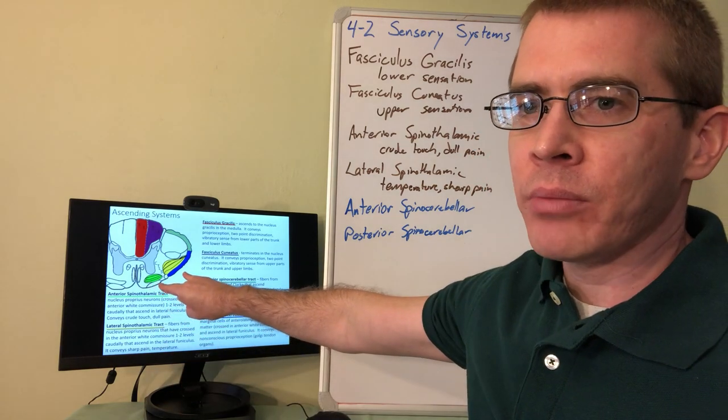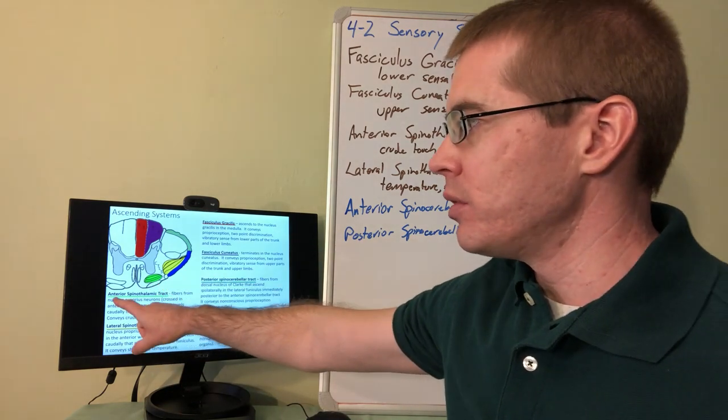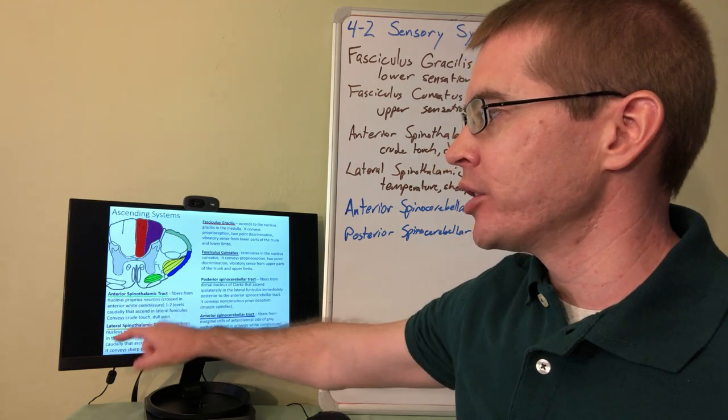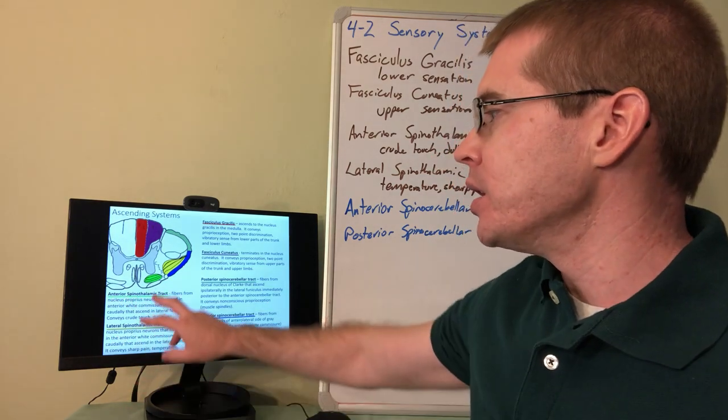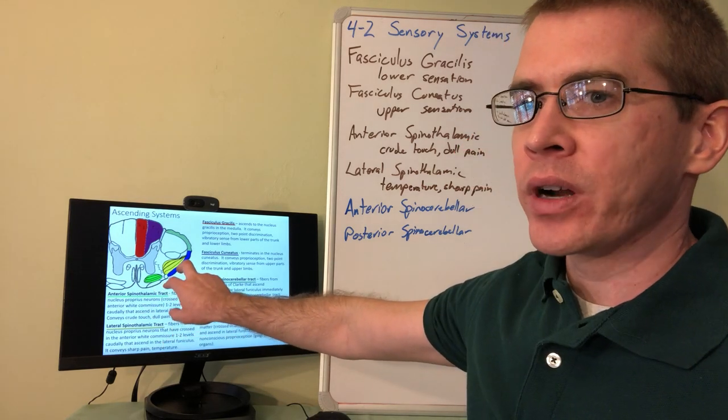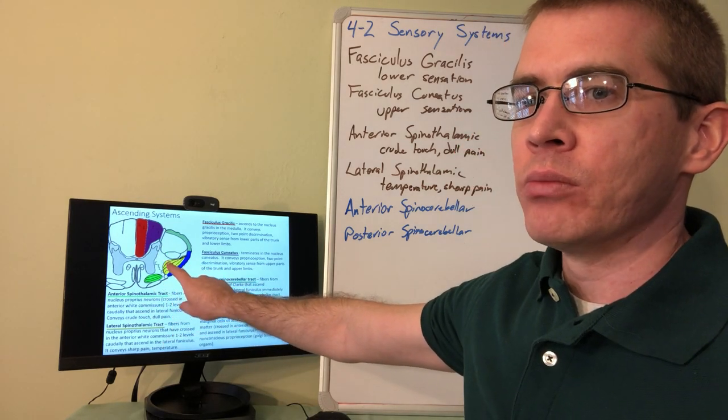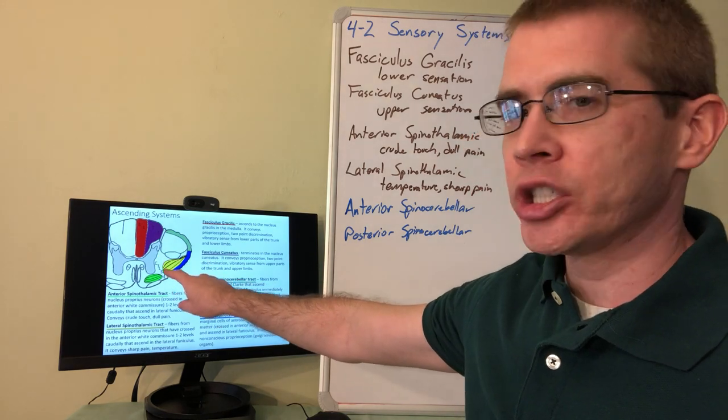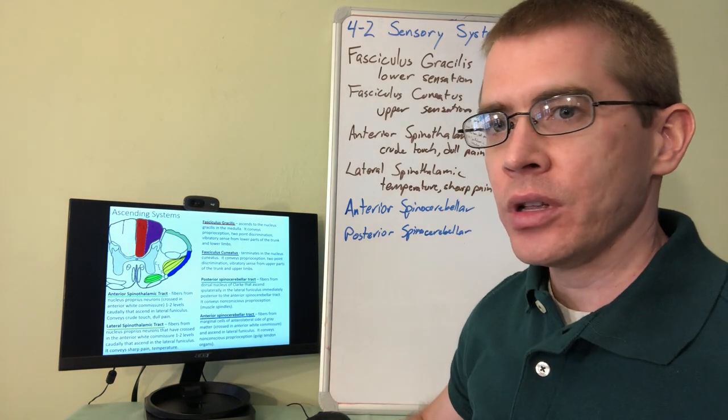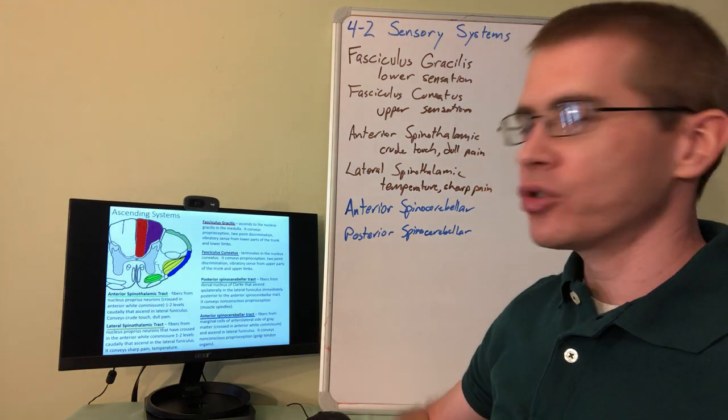The anterolateral components, named after the anterior and lateral spinothalamic tract, which are separate, are also somatotopically organized with cervical portions more deep and the sacral portions more superficial in the spinal cord closer to the edge.